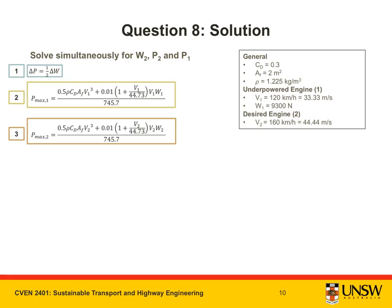Now let's solve simultaneously for our unknowns, W₂ and P₂, as well as P₁. So here we have our three equations: the relationship between P and W, and also our equation for P_max in the first scenario, or the underpowered engine scenario, and our equation for P_max in the desired engine scenario.